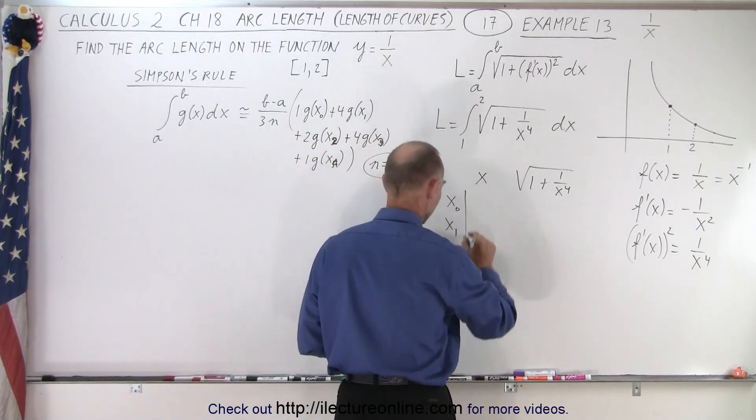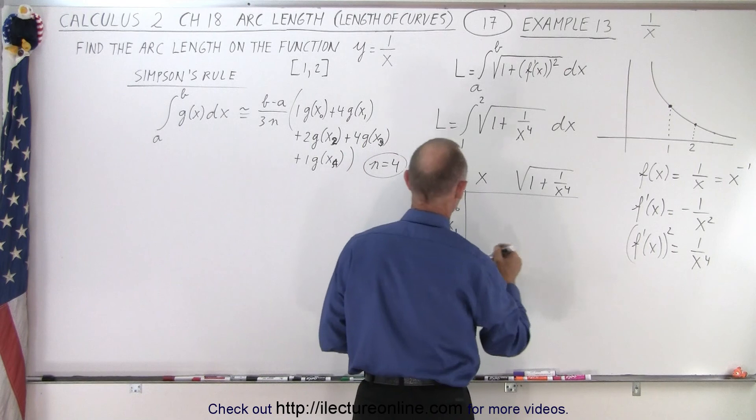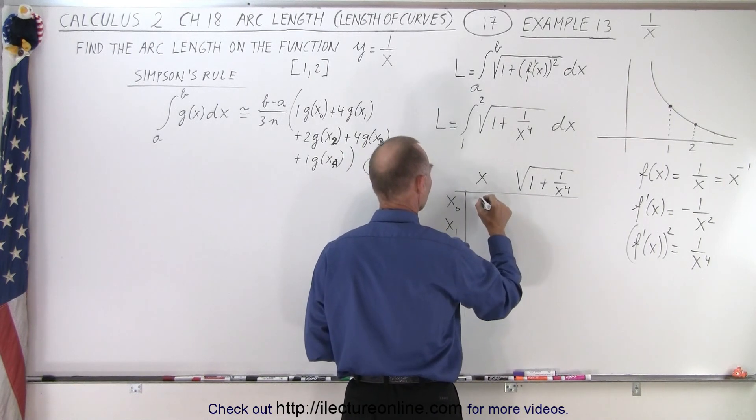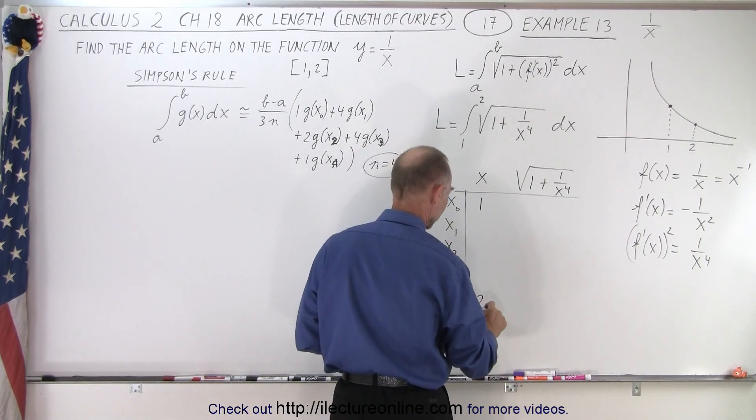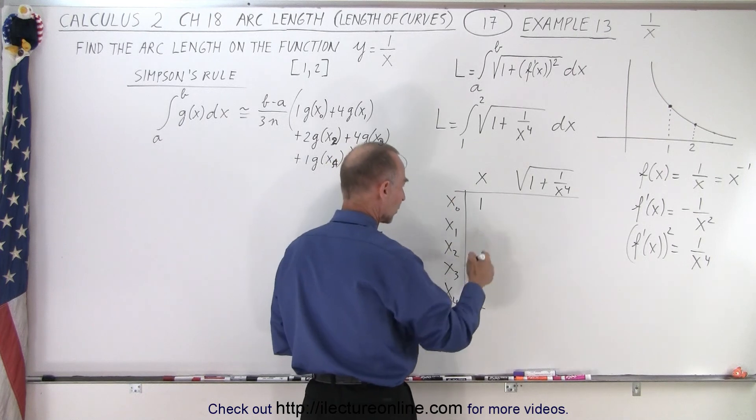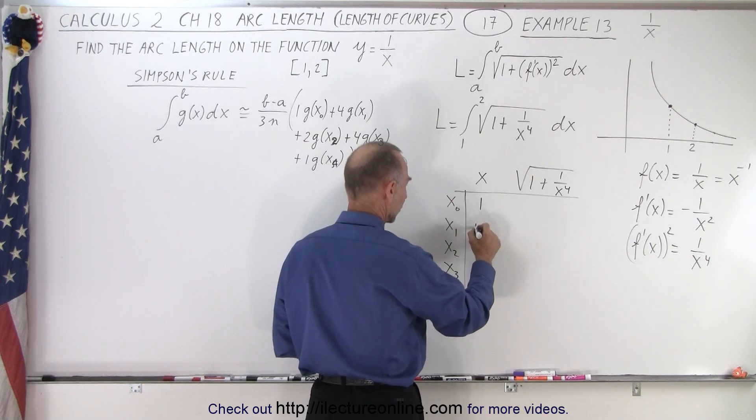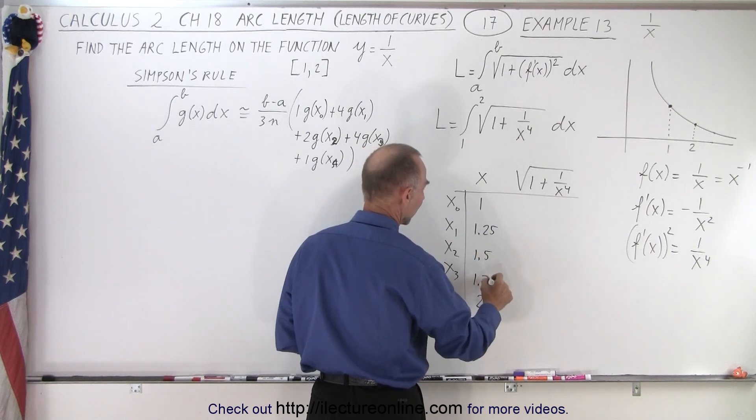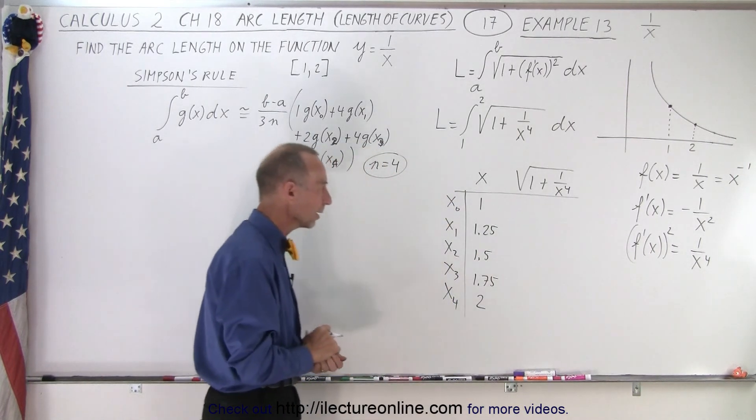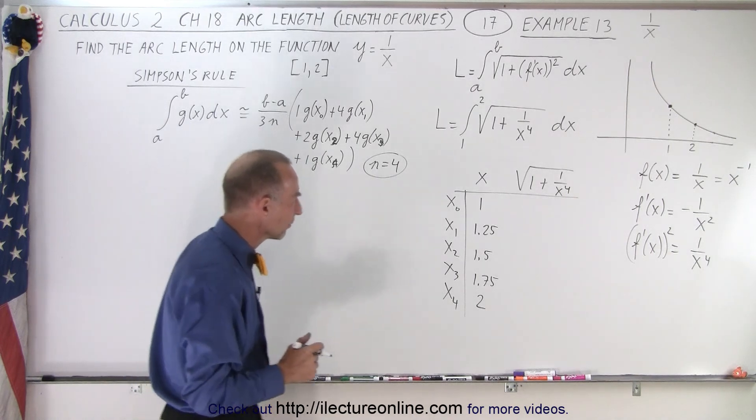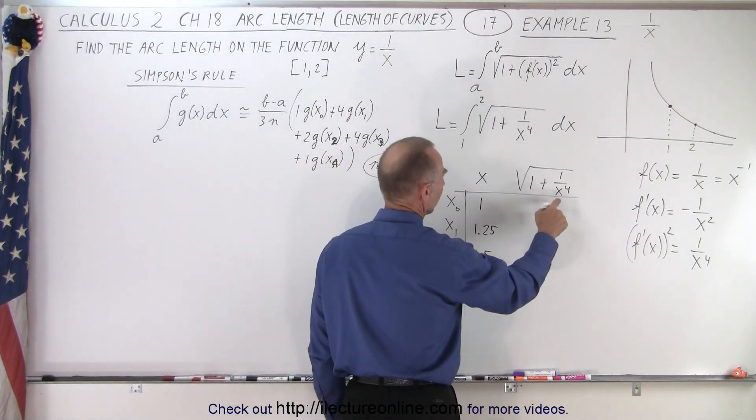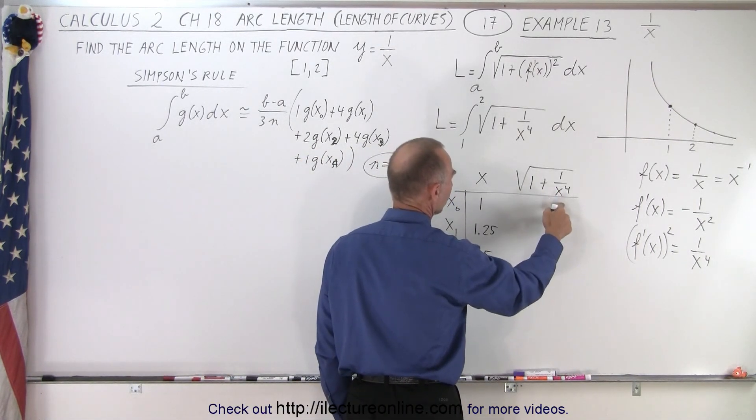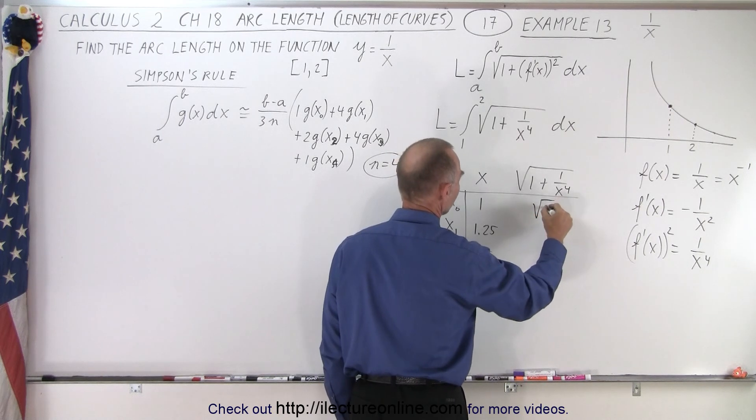And so we're going to go ahead and work that out. So we have x equals 1 to x equals 2. Notice there's four segments. So we need here 1.25, 1.5, 1.75. Each segment is 0.25 wide. And now we need to find the values in here. So if x equals 1, 1 plus 1 is 2. We have the square root of 2.